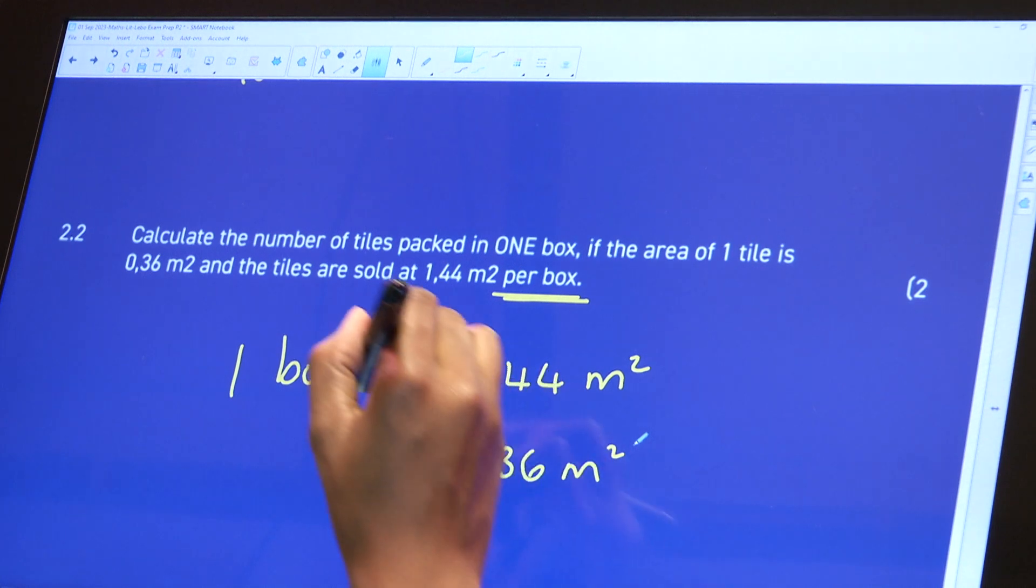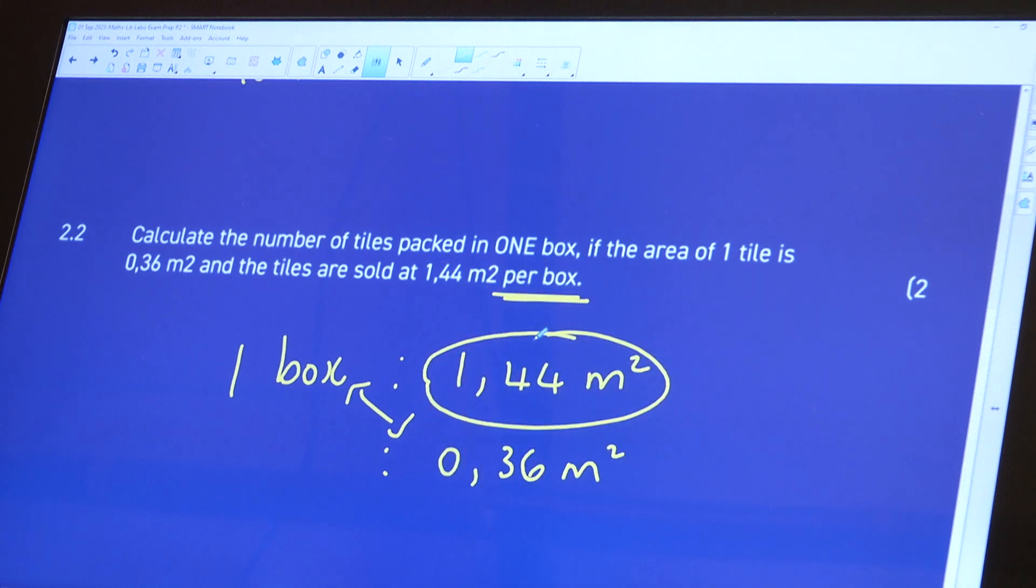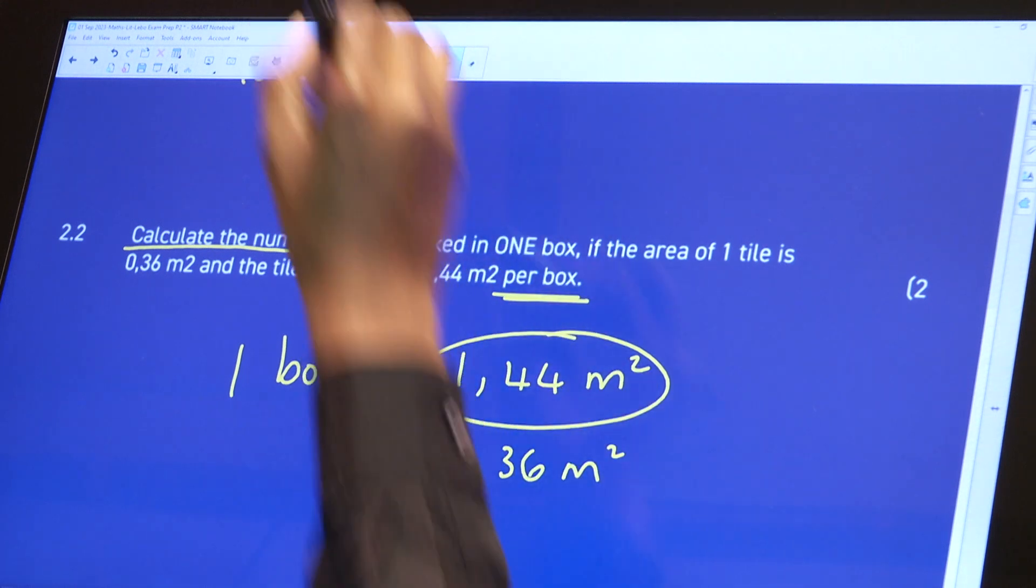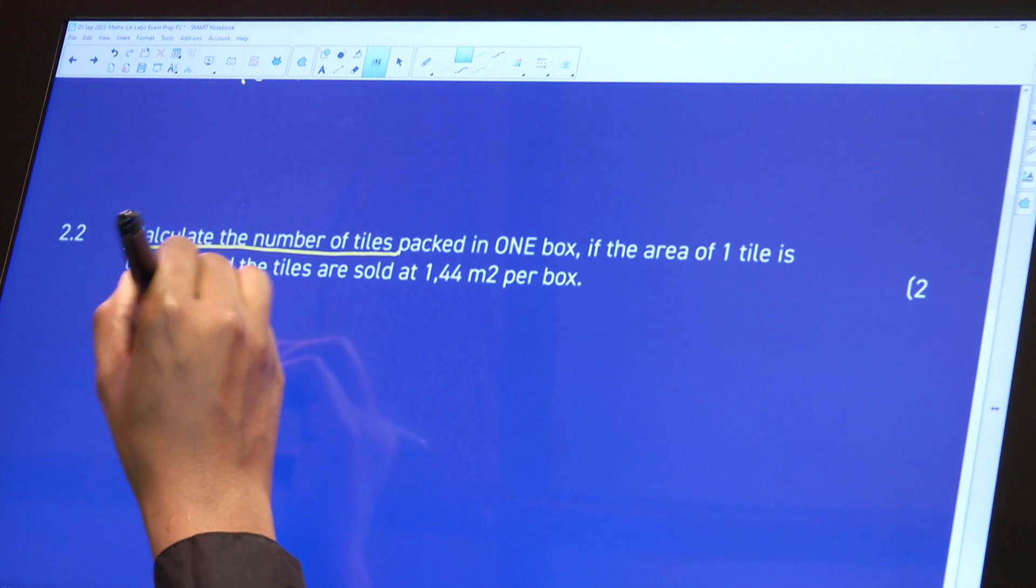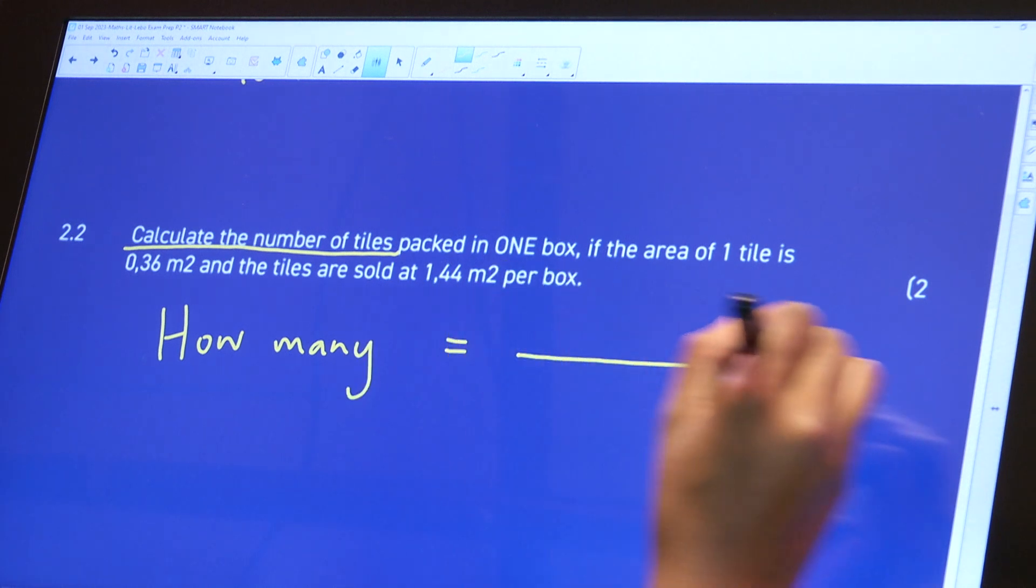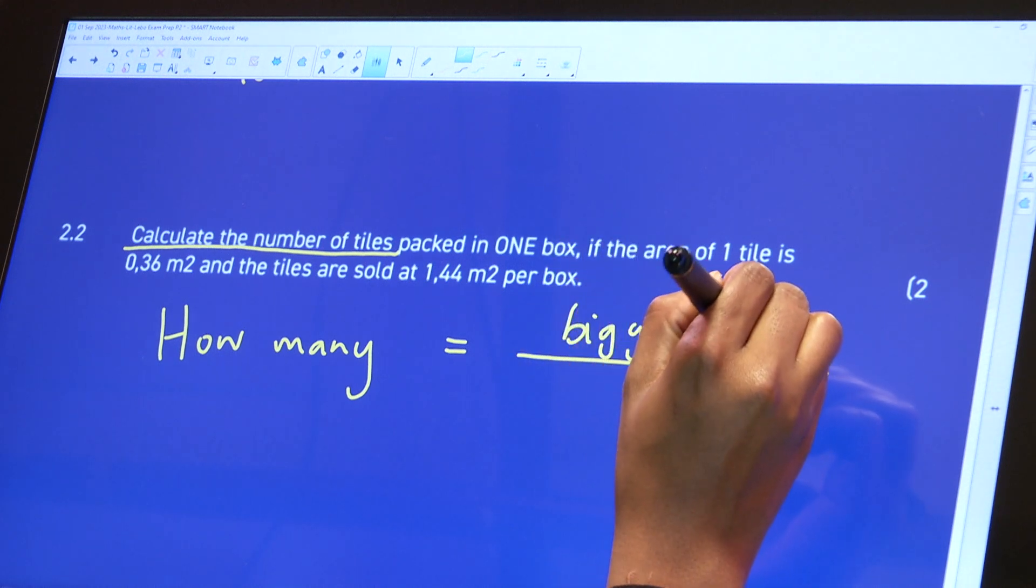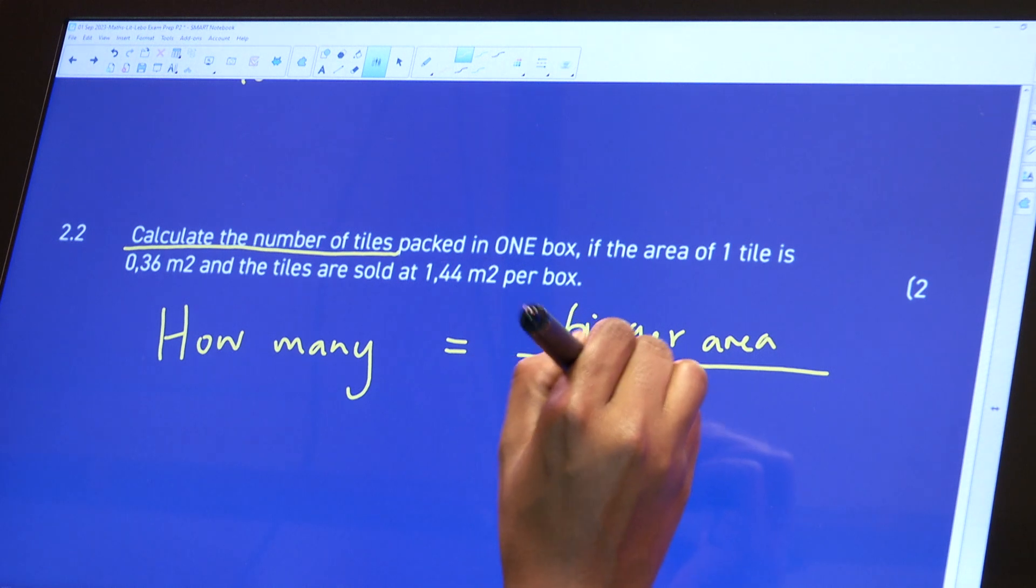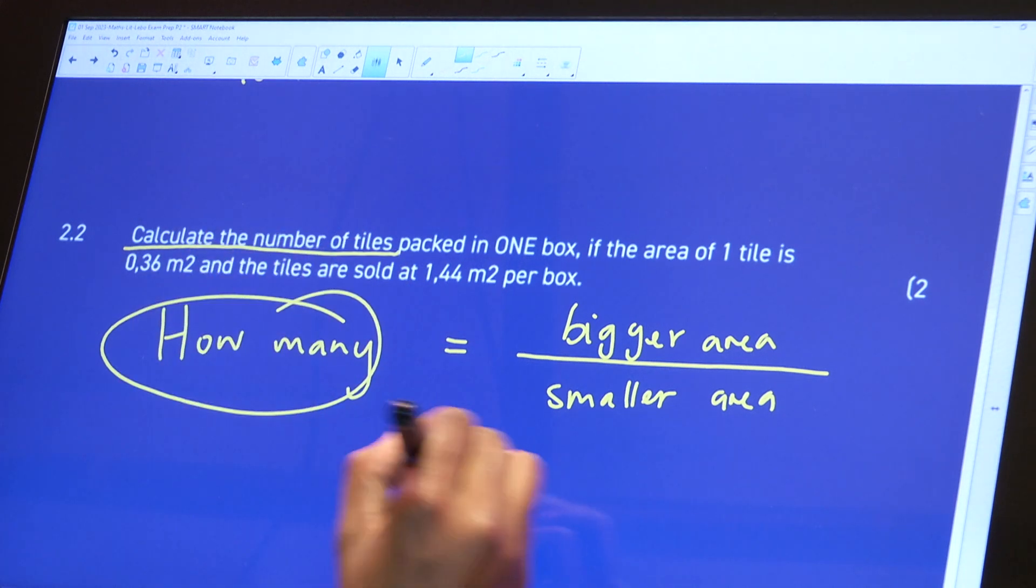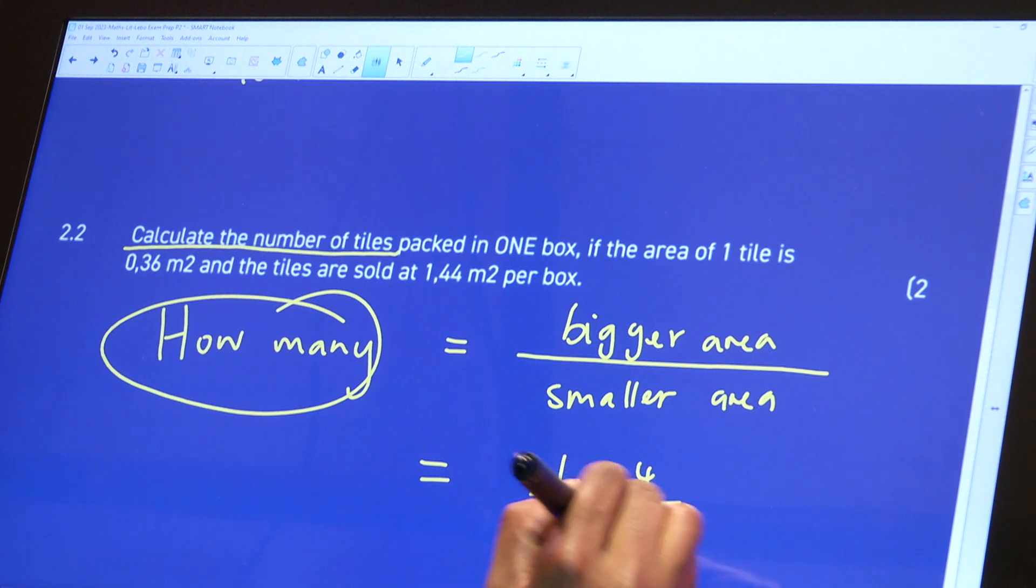And the reason why I'm going to tell you that is that when it says the number of box, it actually means how many. Okay. So let's just take that back. So whenever I have a how many question, I know I'm going to divide how many simply means division. So it's bigger area divided by smaller area. So that's how you calculate how many question. So 1.44 divided by 0.36.